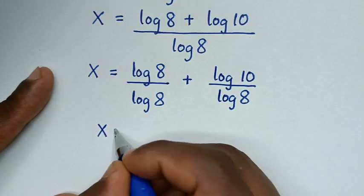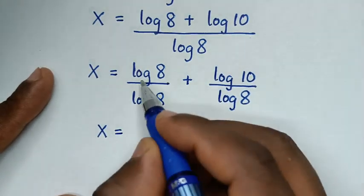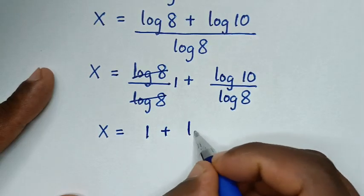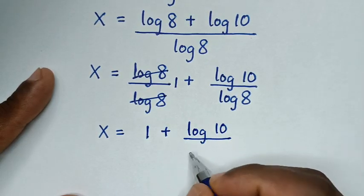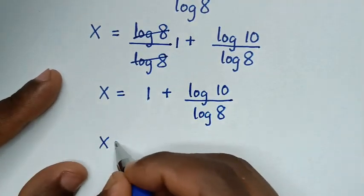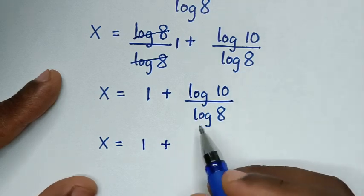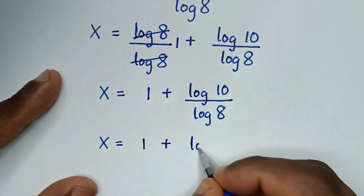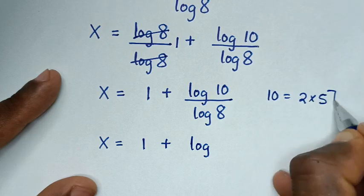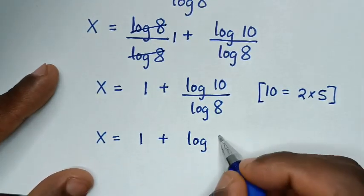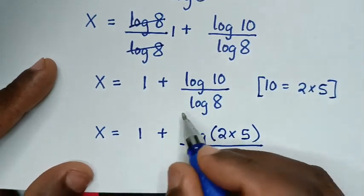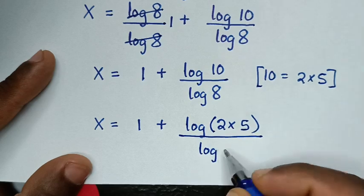So it will be x is equal to log of 8 divided by log of 8, which is 1. So it will be 1 plus log of 10 over log of 8. So it will be x is equal to 1 plus log of 10, where log of 10 is equal to 2 times 5. So into log of 10, it will be log of 2 times 5 bracket, then over this log of 8.